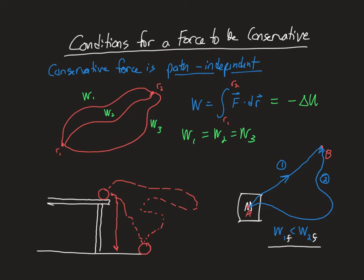Of course, if you're going to actually check that a force is path independent, it feels like you have to check every single path in the universe — you'd have to do an integral over every possible path to make sure the force is actually path independent. Obviously, that's not a reasonable thing to do for a given force. So what I'm going to talk about is how we can actually determine a force is path independent by using some mathematical conditions on the force itself.